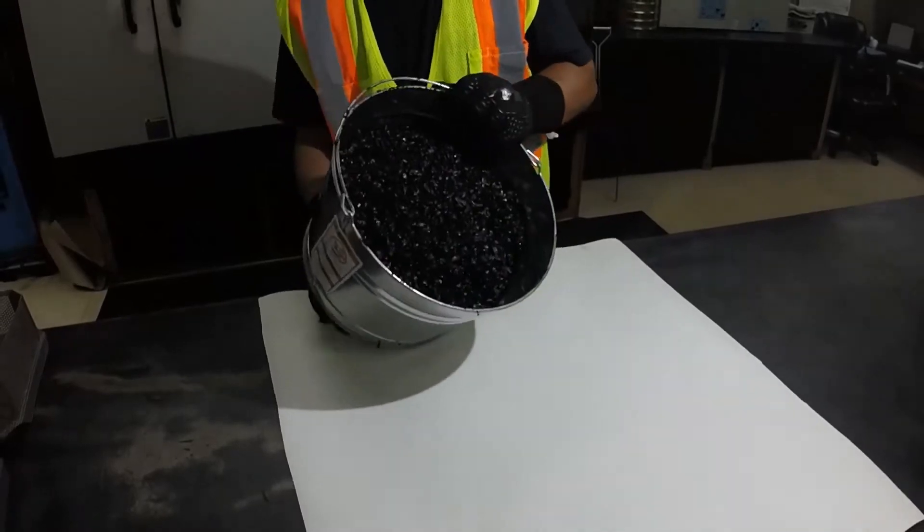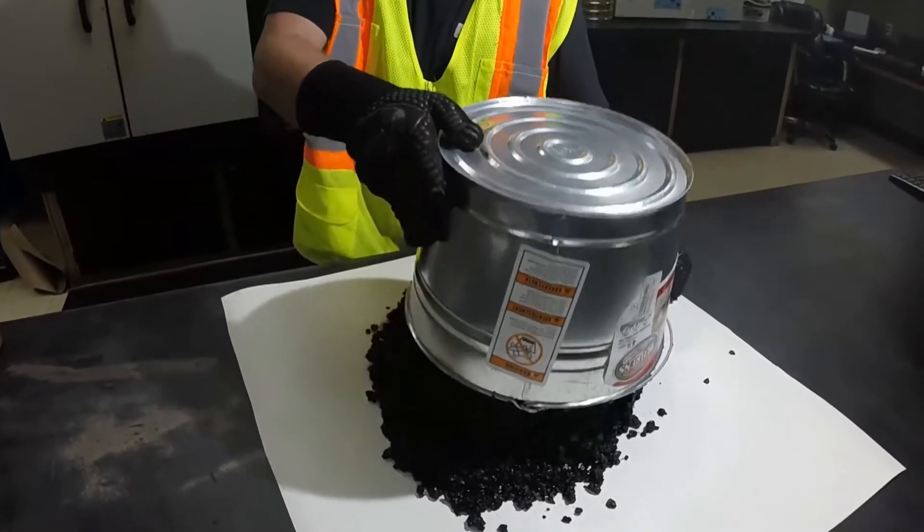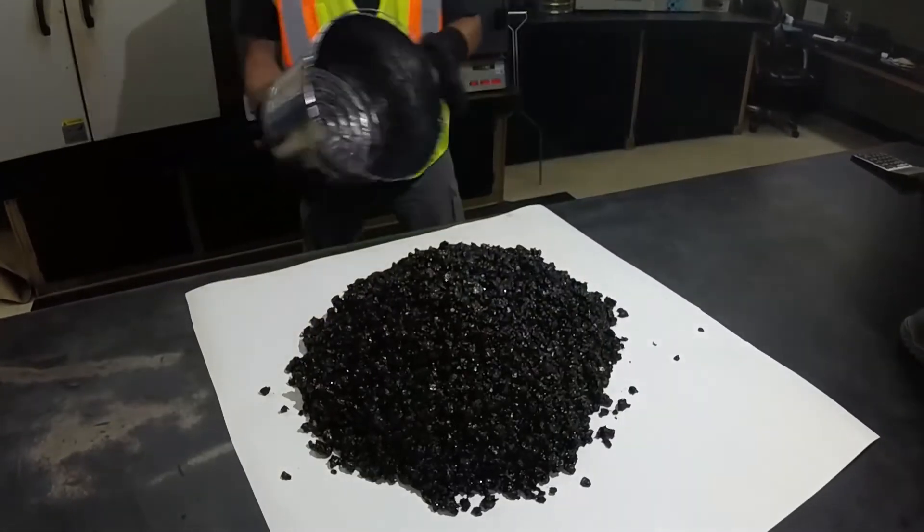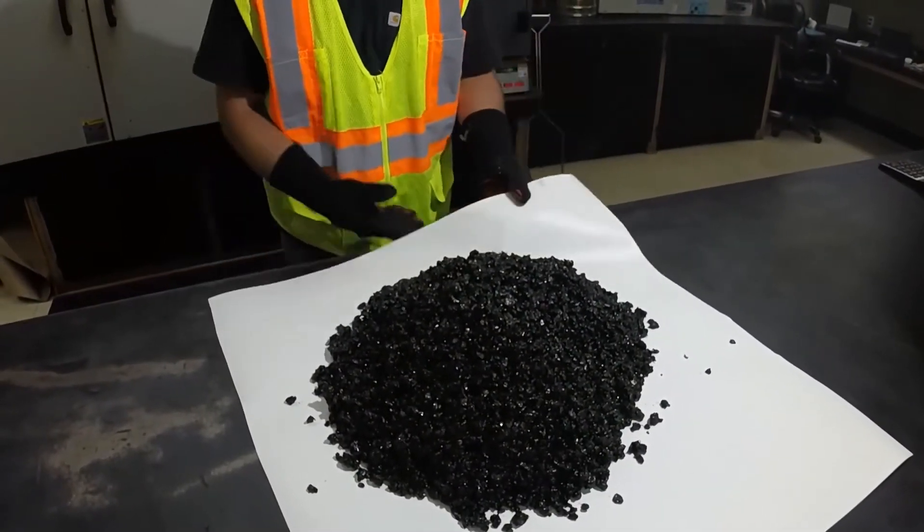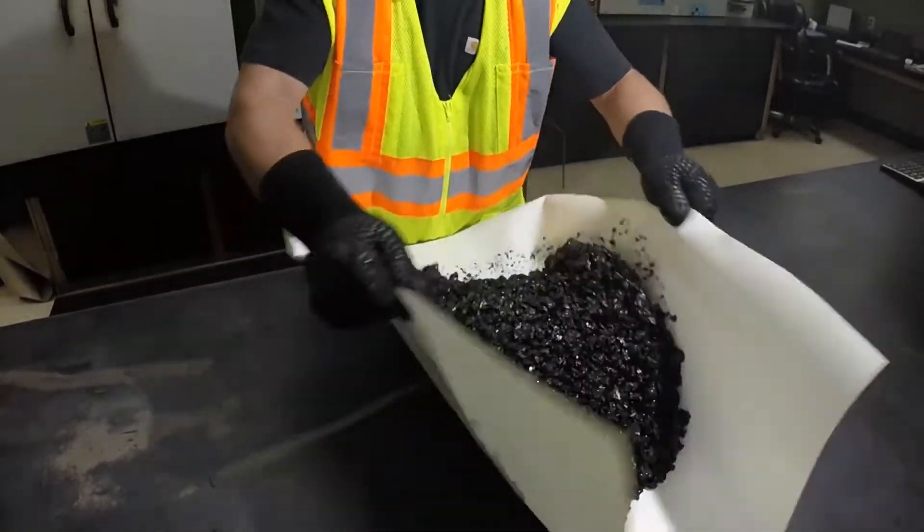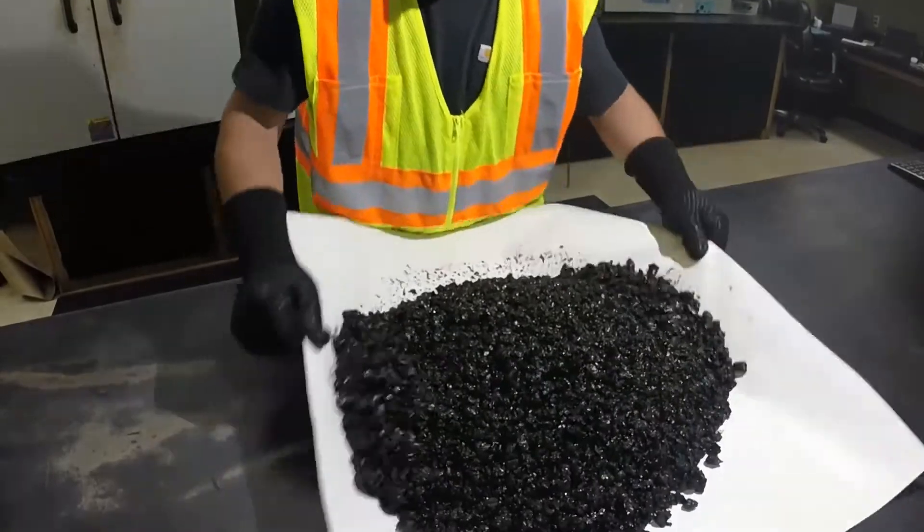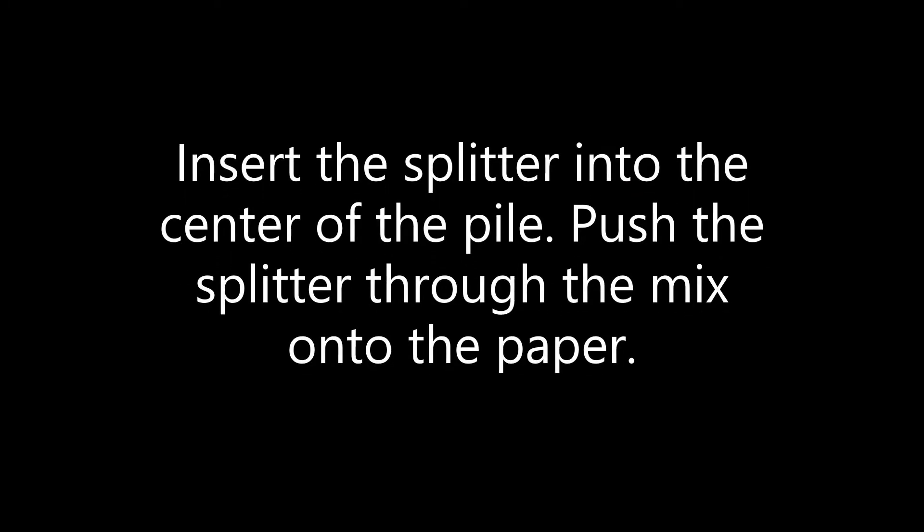When dumping the mix from the bucket onto the paper, as much as possible, the mix should be dumped in one quick motion as one mass. Do not pour the mix out of the bucket. Quickly turn the bucket upside down in one motion and lift the bucket straight up. Do not roll the mix. Manipulate the mix only enough to form a rounded pile.